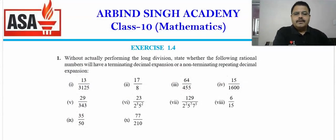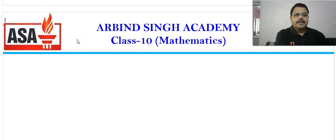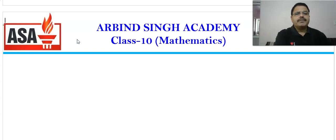Hello, welcome to Urban Scene Academy. We are discussing real numbers, and this is video lecture 9. I hope you have already watched parts 1 to 8. In this lecture, we are going to discuss some theorems and thereafter some questions. The theorem states that a real number with terminating decimal expansion can be represented in the form p/q where q is a factor of 2 and 5.